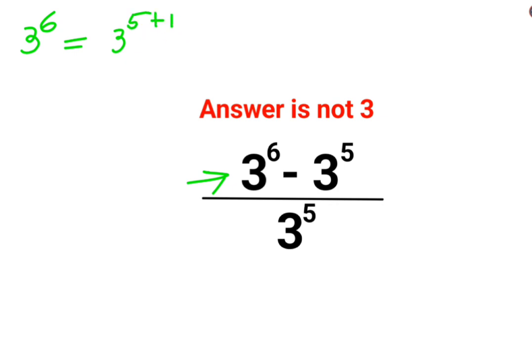This is in the form of a raised to m plus n, which can be written as a raised to m into a raised to n. So here also, this can be written as 3 raised to 5 into 3 raised to 1.